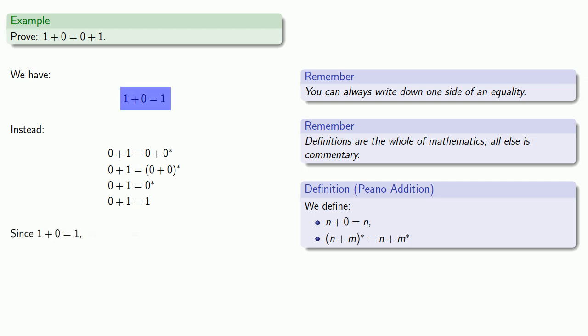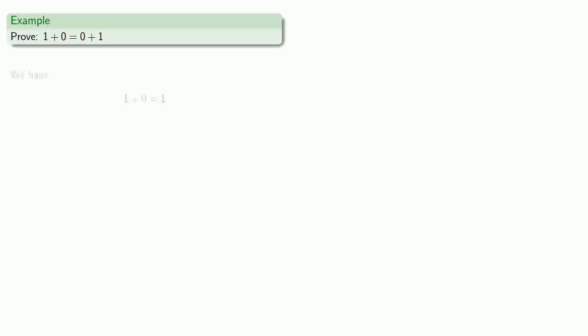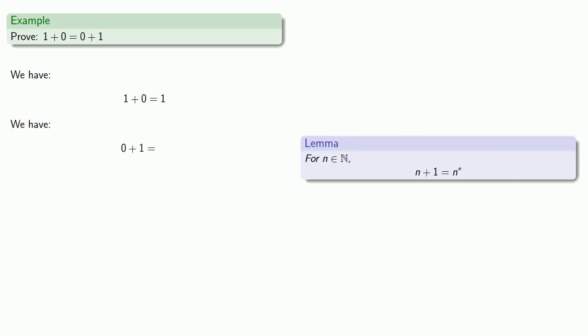Since one plus zero is equal to one, and zero plus one is equal to one, we can conclude that one plus zero is equal to zero plus one. Here's a useful strategy when studying mathematics, especially proofs: prove it again. Proof is a study technique — it makes you recall what you should already know. Our proof can start the same way: one plus zero equals one, which follows directly from the definition of addition. And we know that n plus one is the successor of n, so zero plus one is the successor of zero, which is one. And so we've shown that one plus zero is equal to zero plus one.